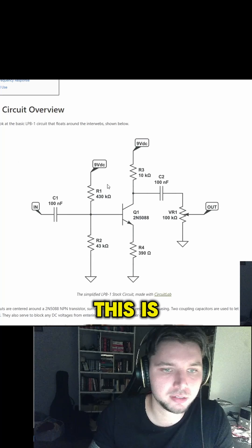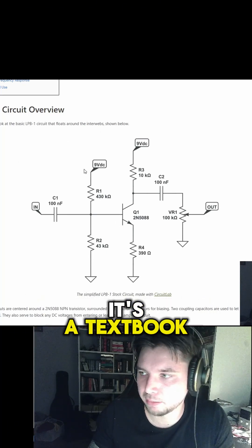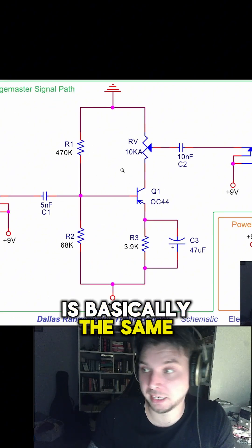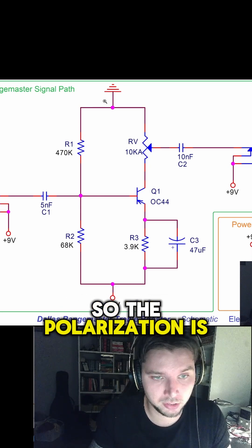The most popular boosters are something like LPB1. This is a very simple common emitter booster, it's super simple, it's a textbook circuit basically. Also Rangemaster, which is basically the same circuit, it's also a common emitter circuit but using PNP transistor, so the polarization is reversed.